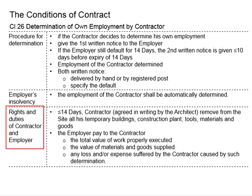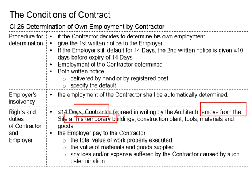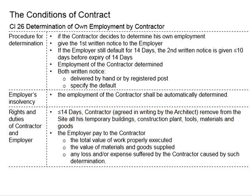The following are the rights and duties of the contractor and employer after determination. Within 14 days, the contractor will need to remove from the site all temporary buildings, construction plant, tools, materials, and goods. The removal of these items needs to be agreed by the architect and should be well documented in writing, so that the relevant agreement is traceable and can serve as evidence in case of any dispute. Now the contractor has determined himself from the project and the employer is at default.